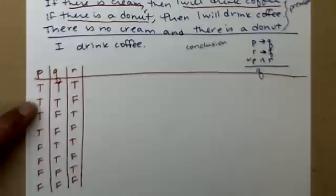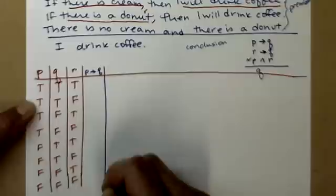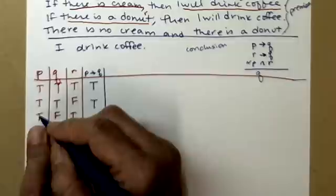And now I need to build each of my lines in my premises statements. So if P, then Q. I'm going to run my fingers down the P and Q column. If true, then true is true. If true, then true is true. If true, then false.